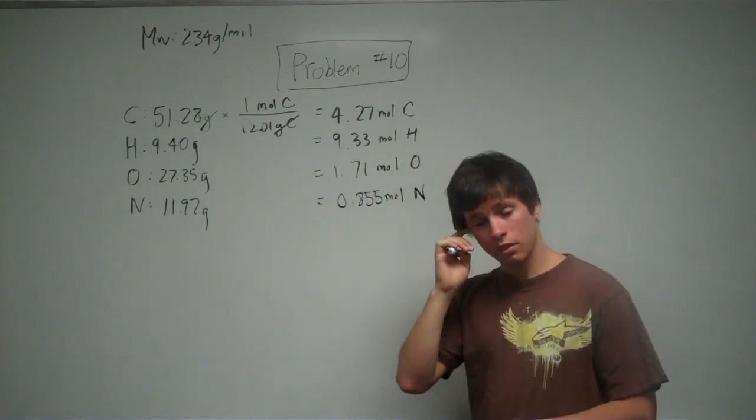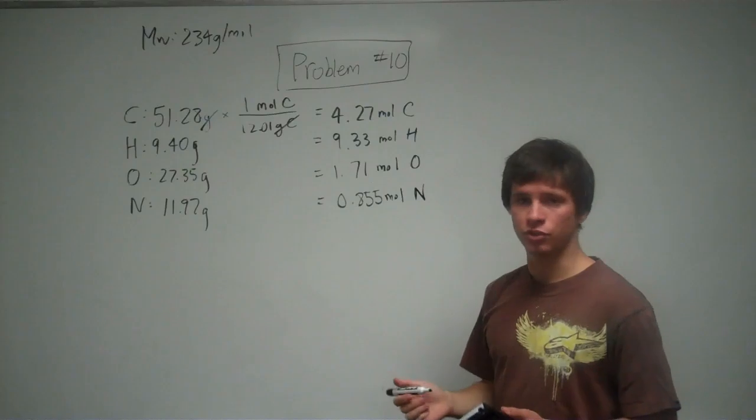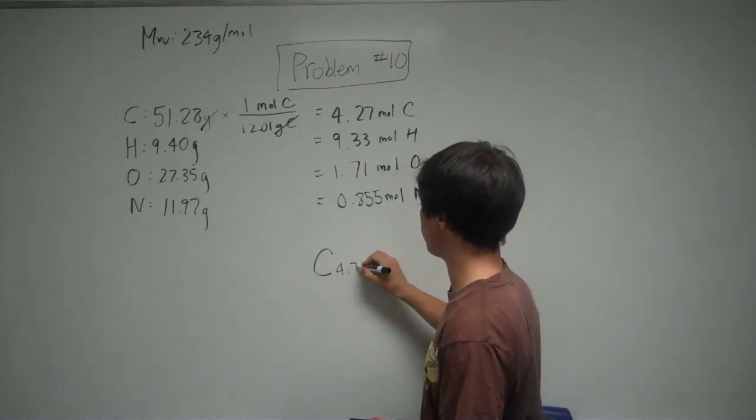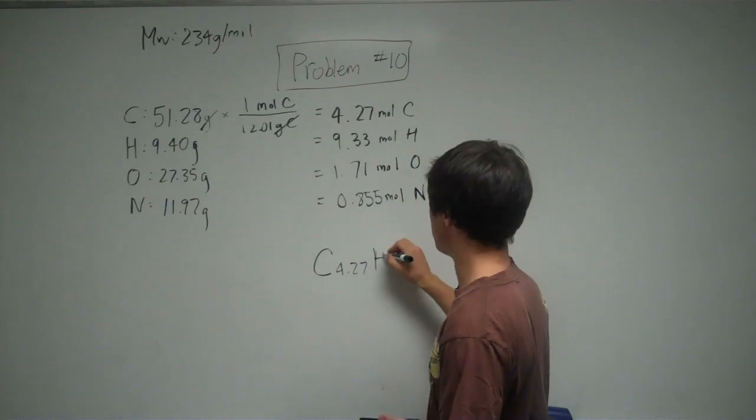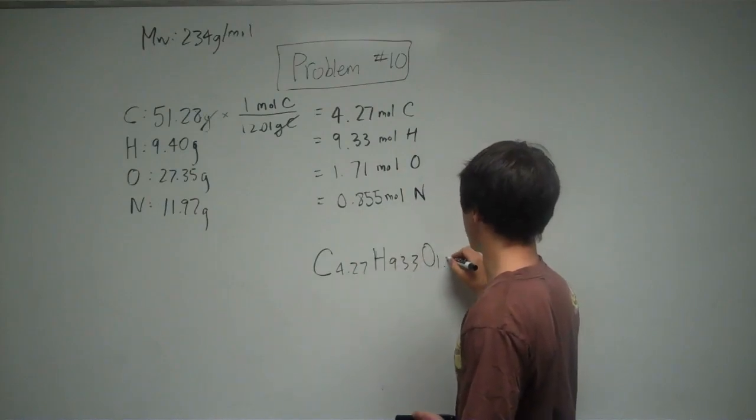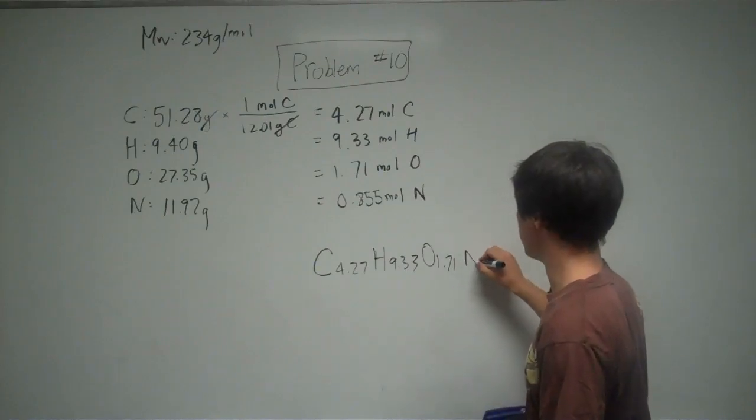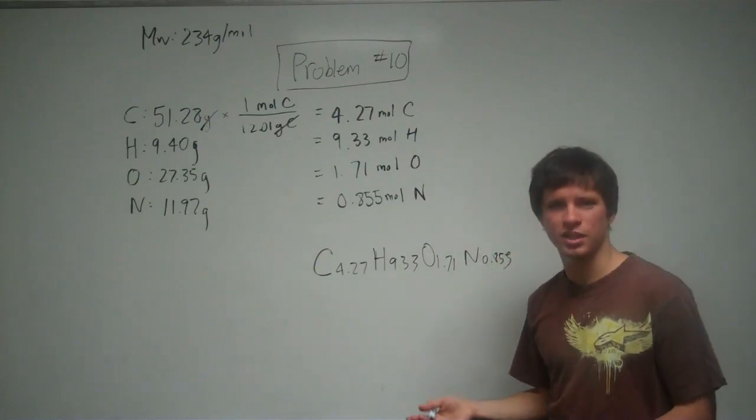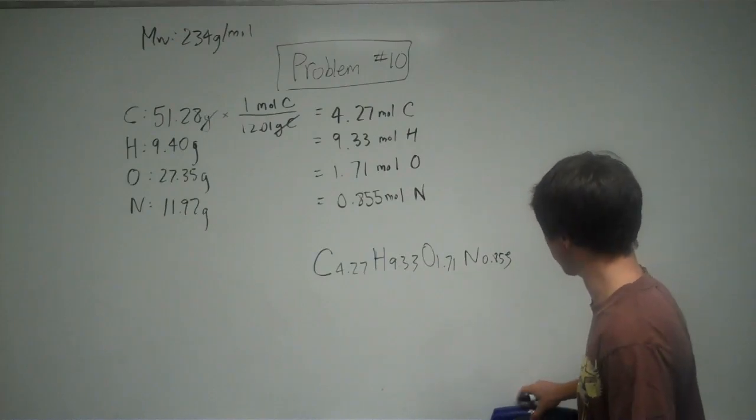So, technically now, you do have an empirical formula. You can say, okay, the answer is C 4.27, H 9.33, O 1.71, N 0.855. But you don't see molecular formulas like this. It doesn't look very nice.